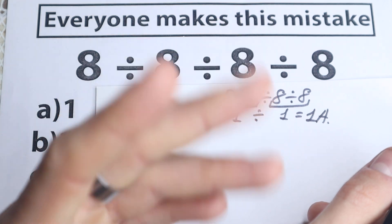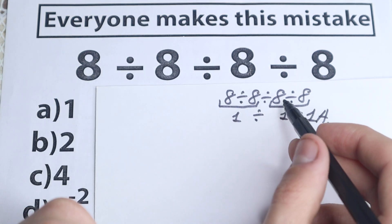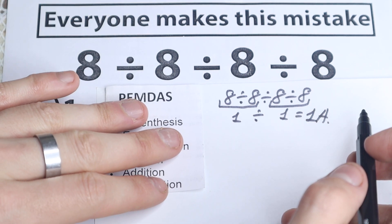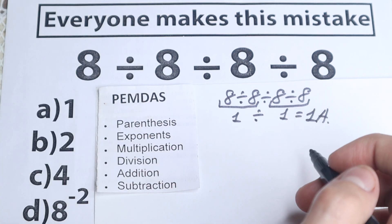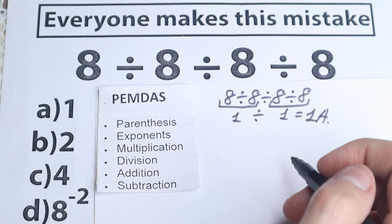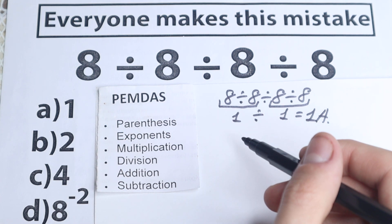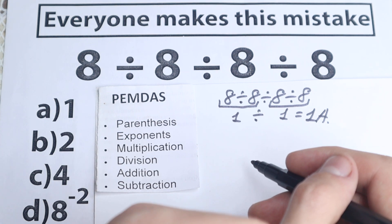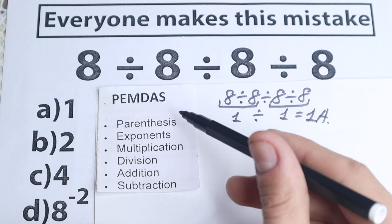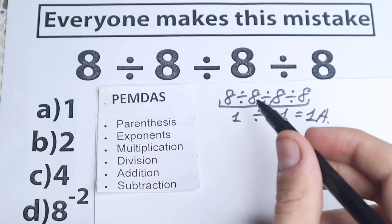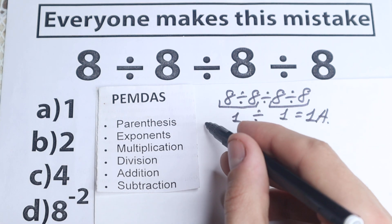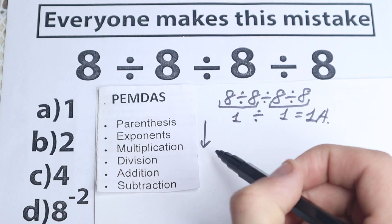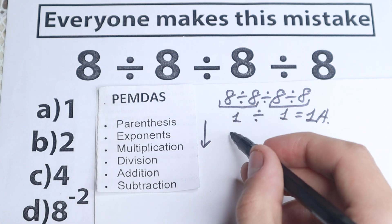I'm going to show you the correct order of operations, because that previous approach uses a kind of weird order of operations. If we look at PEMDAS — the main order of operations — all internet libraries work according to PEMDAS. It tells us we need to start from parentheses, going from the top to the bottom, and the first step is parentheses.